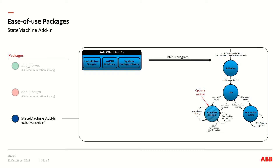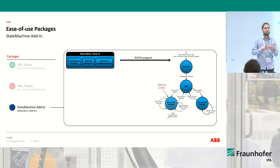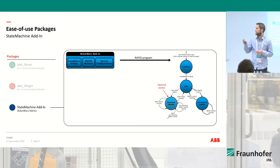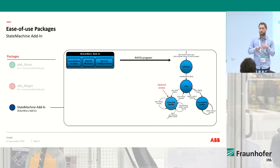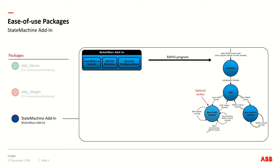The RobotWare add-in has an installation script that loads the system configurations and RAPID modules, making up a ready-to-run RAPID program. The execution flow has some initialization, then it enters an idle state and waits for input from an external system — the whole intention is to use this with external setups. State transitions are triggered by IO signals, and you can use the RWS library to trigger these changes. If you have the EGM license, an EGM section is optionally included in the program, and it works well with the EGM library.